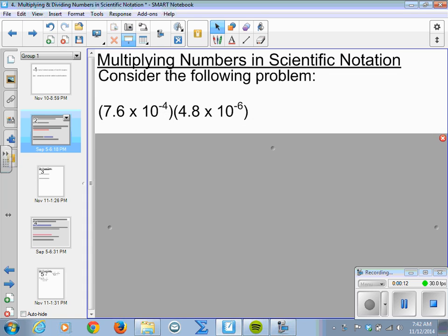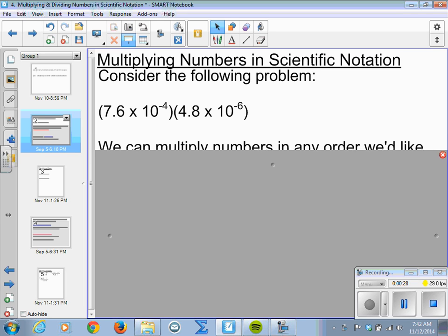So we'll consider this problem: 7.6 times 10 to the negative 4th times 4.8 times 10 to the negative 6th. So we've got two numbers in scientific notation. Now we could expand them and try to multiply them, but that's going to be a super small number. It may not fit in our calculator, so we'll leave it in this notation.